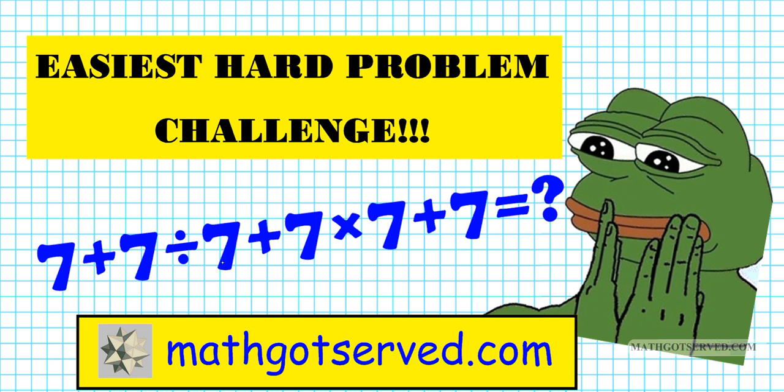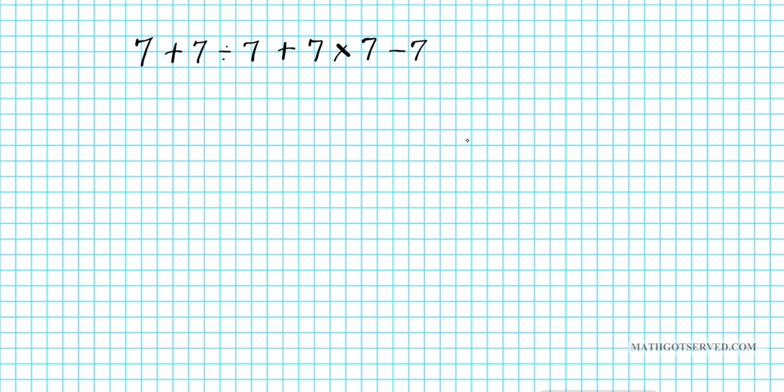7 plus 7 divided by 7 plus 7 times 7 plus 7. So what's the answer to this expression? What does this expression equal to?